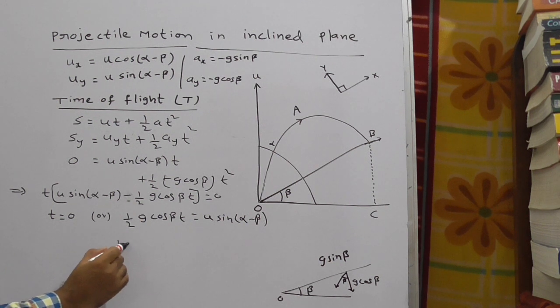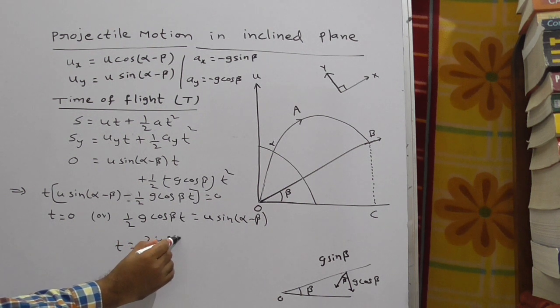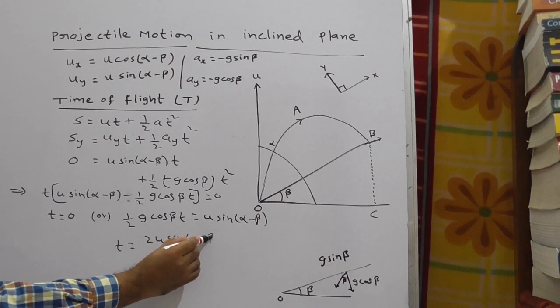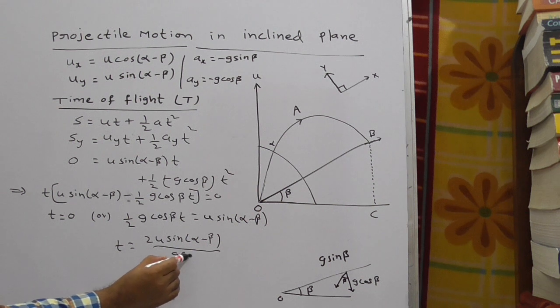From cross multiplication, t is equal to u sin(alpha minus beta) by g cos beta.